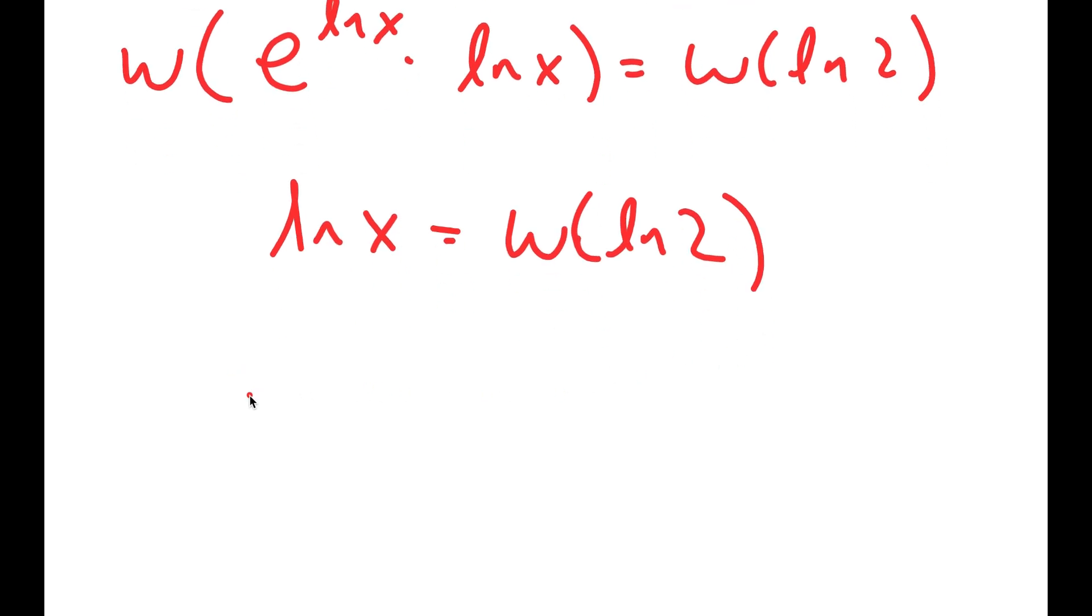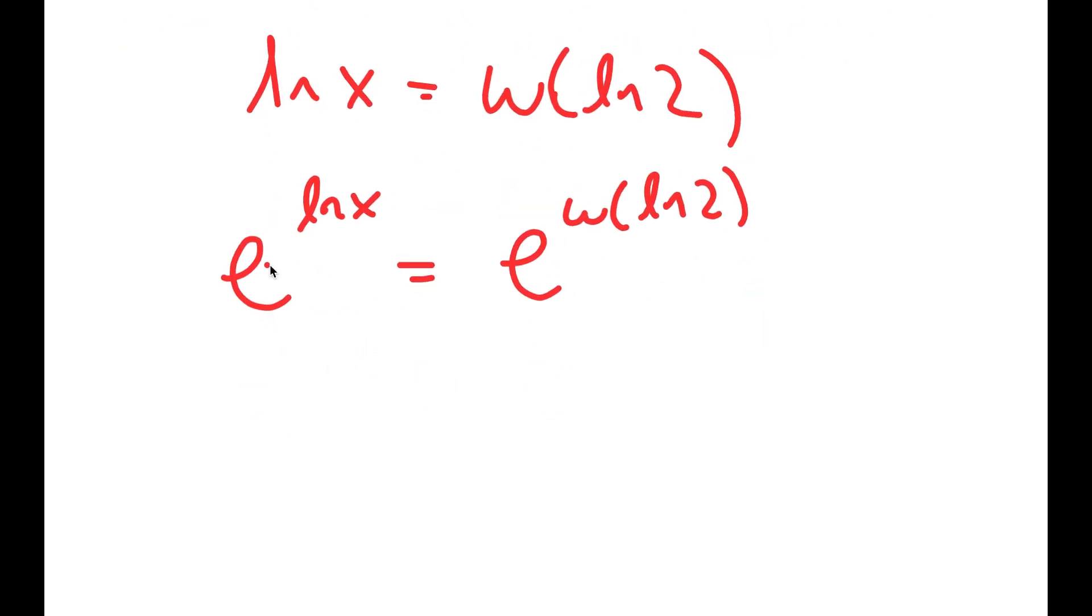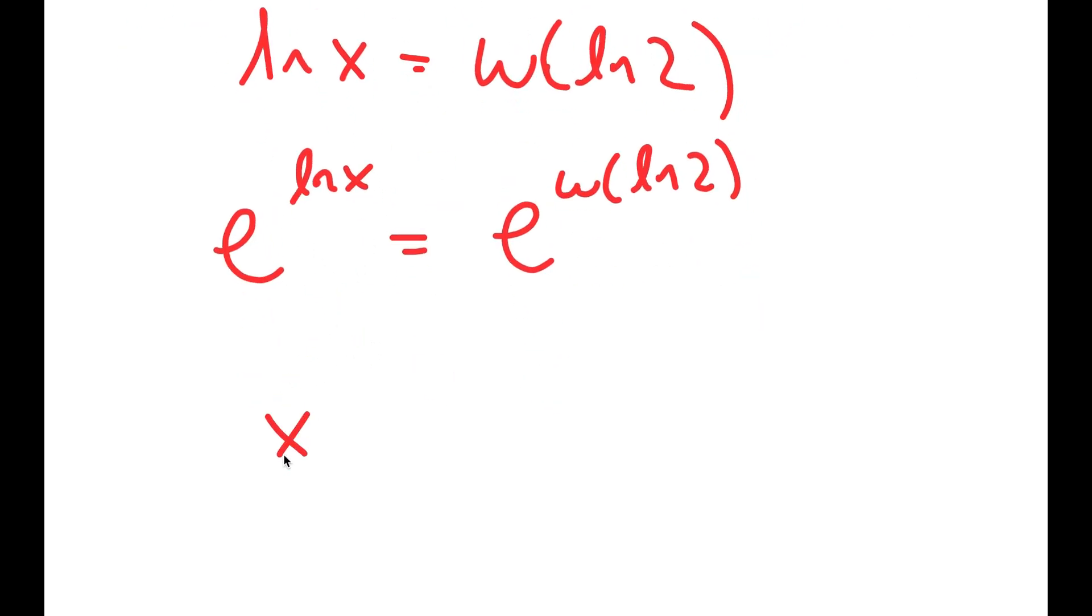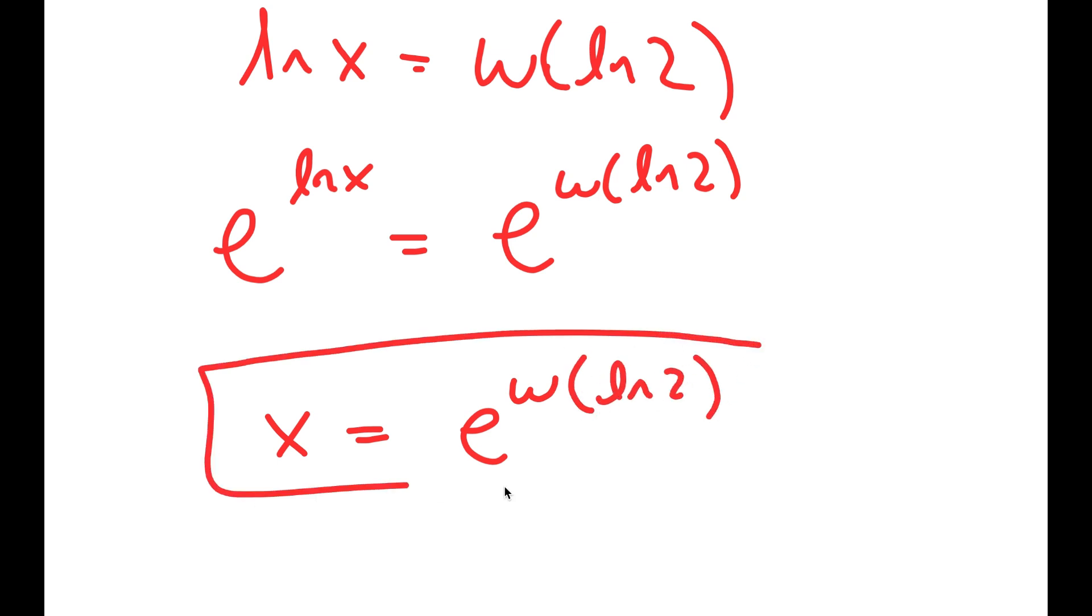So now to further simplify this, because we're just solving for x, I'm going to take e to the power of both sides. So now that e and ln cancel out, I'm left with x is equal to e to the power of W of ln 2. So this is my answer.